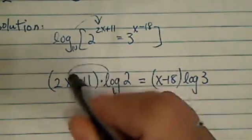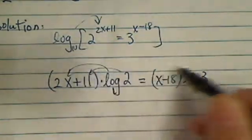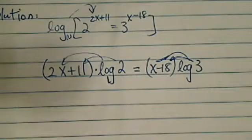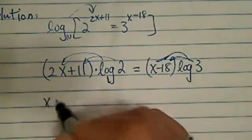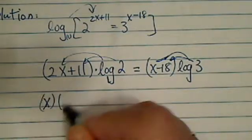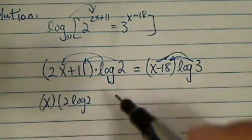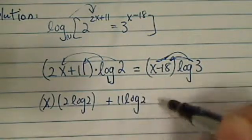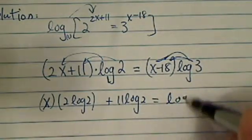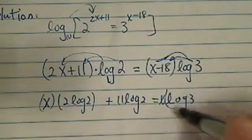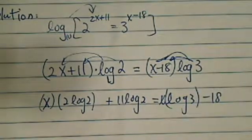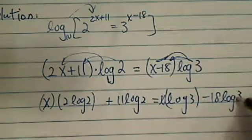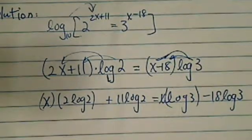Now from here, all we have to do is really just collect all the x terms and gather all the constant in one side. So we have, for the x term, I have 2 times log of 2, and then plus 11 times log of 2. On this side, I have log 3 and x times that, and then minus 18 log of 3.